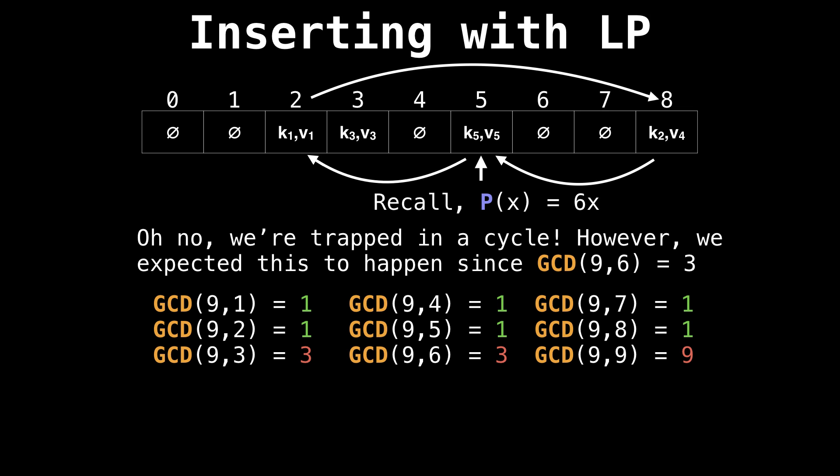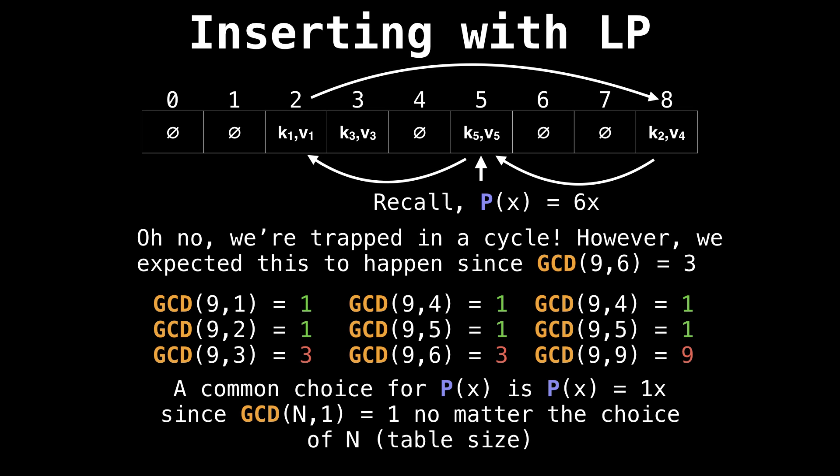If we look at all the possible a values we could have selected instead of six, we see that the ones that give a greatest common denominator of one with N the table size are one, two, four, five, seven, and eight, while any multiple of three would give us something else. This comes to the realization that for our choice of P(x), if we choose P(x) to be one times x, then the greatest common denominator of N and one is always going to be one, no matter what our choice of the table size, which is why P(x) equals one times x is a very popular probing function choice.